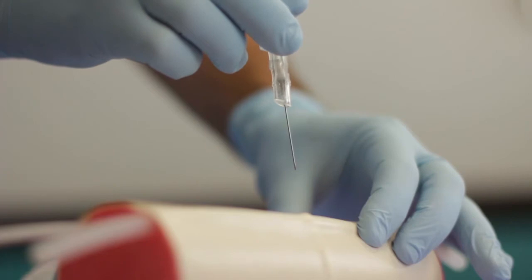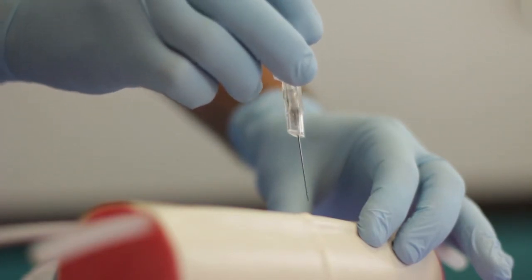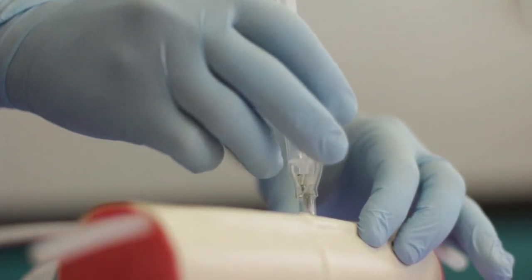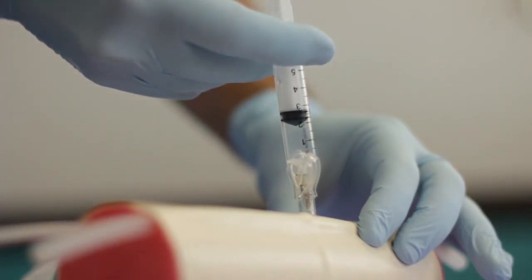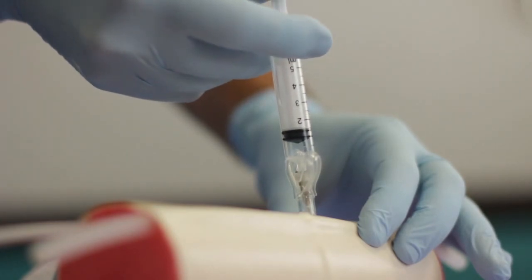Perform a simulated intramuscular injection by injecting the Venipuncture trainer. Penetrate the skin at 90 degrees and insert the needle up to the level of the safety device. Inject the 3-5 milliliter air into the Venipuncture trainer.